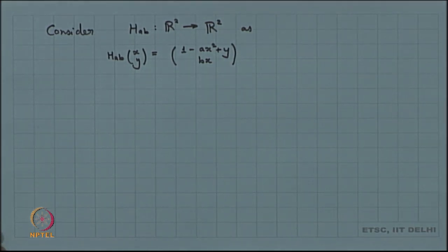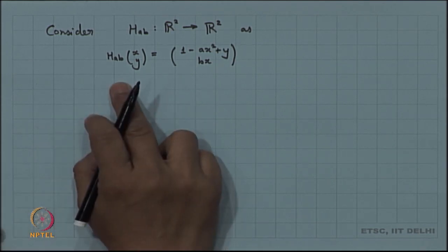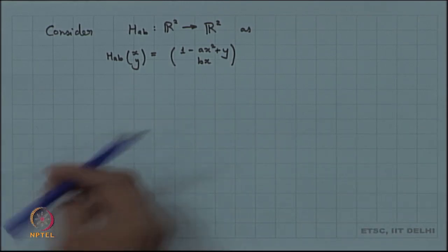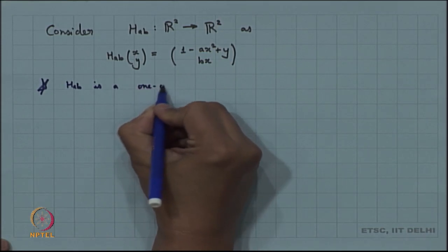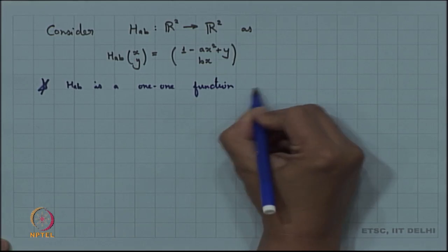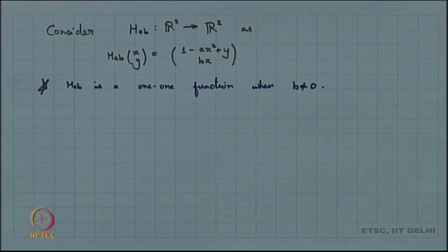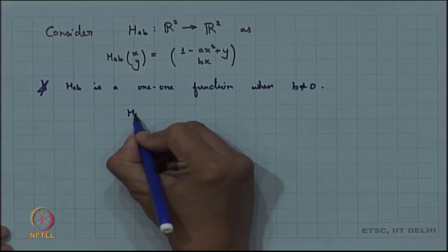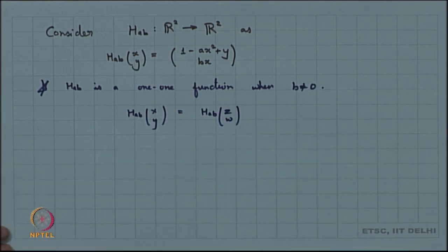The Hennon map H_{a,b}(x, y) takes the x-coordinate to 1 - a·x² + y and the y-coordinate to b·x. A first observation is that when b ≠ 0, H_{a,b} is a one-to-one function on R².